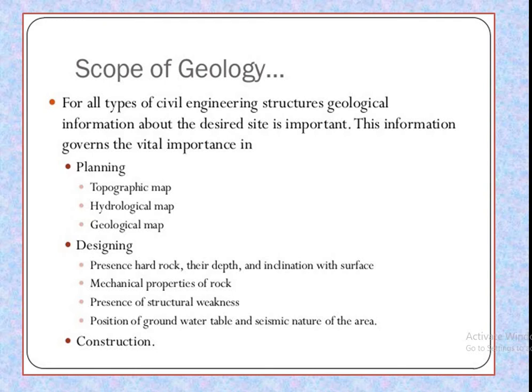For all types of civil engineering structures, geological information about the desired site is important. This information governs vital aspects in planning — including topographic maps, hydrological maps, and geological maps — and in designing, such as the presence of hard rock, its depth, its inclination with the surface, mechanical properties of the rock, presence of structural weakness, position of the groundwater table, and the seismic nature of the area. In construction, geological advice is also required.